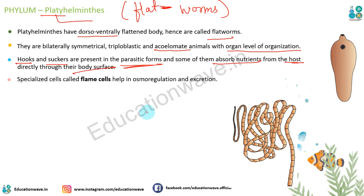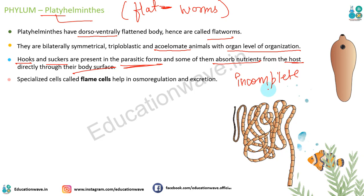Ye pehle animals the jinke andar organ system dekha gaya. Inke paas ek special feature hai - inki jo alimentary canal hoti hai woh incomplete hoti hai. Agar aap point likhna chahein toh keh sakte hain ki inke paas incomplete alimentary canal hai, matlab inke paas poora digestion system proper nahi hota.